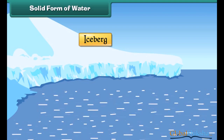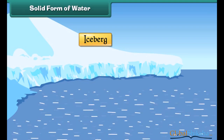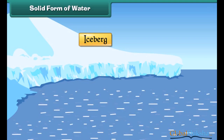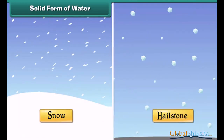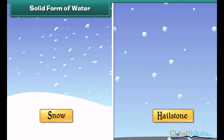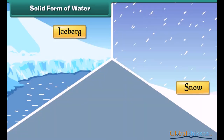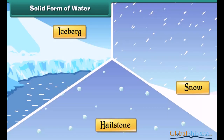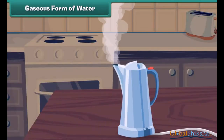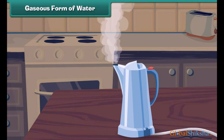Icebergs are huge pieces of ice found in seas and oceans at very cold places. Snow and hailstones are small pieces of ice. Icebergs, snow, and hailstones are also examples of water in solid form. However, they are naturally formed.